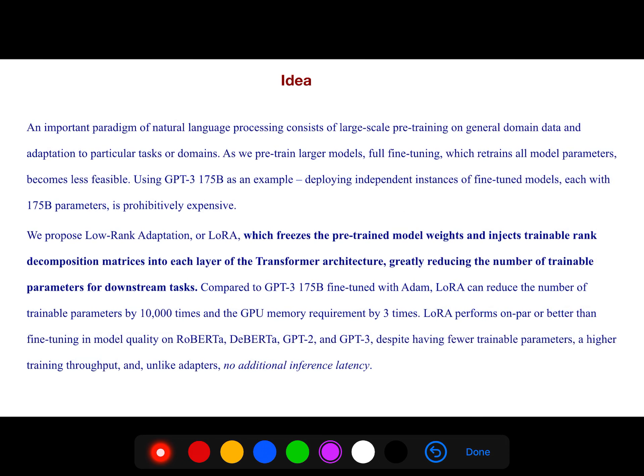An important paradigm of natural language processing consists of large-scale pre-training on general domain data and adaptation to particular tasks or domains. As we pre-train larger models, full fine-tuning which retrains all model parameters becomes less feasible.